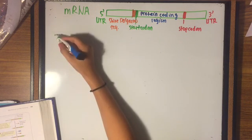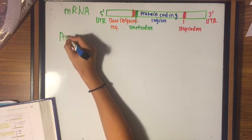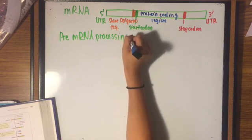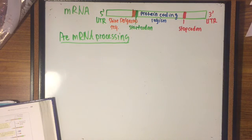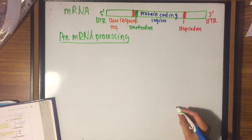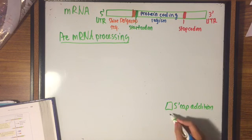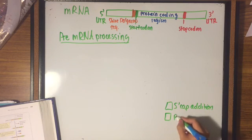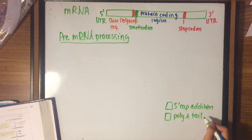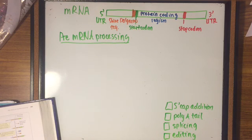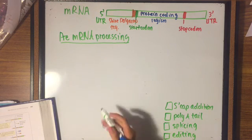Transcription and translation are coupled in bacterial mRNA, whereas transcription occurs in the nucleus of eukaryotes, and translation occurs in the cytoplasm for eukaryotes. This gives way to many modifications that may happen in eukaryotic cells, such as the 5' cap addition, the poly-A tail addition, splicing, and some editing.